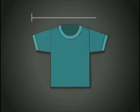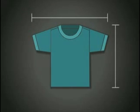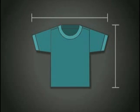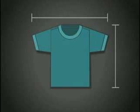Dimensional stability is defined as the resistance to change in the length and width dimensions of a fabric or garment. Dimensional change is the measurement of the change in length and width of a product. The change is usually expressed as a percentage of the initial dimension of the specimen.